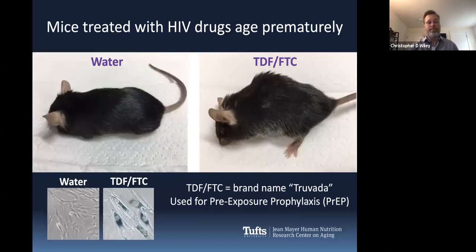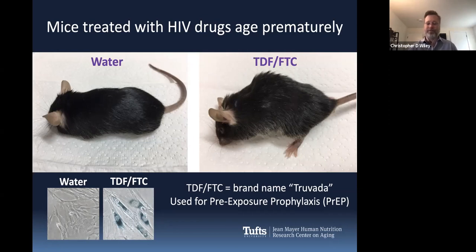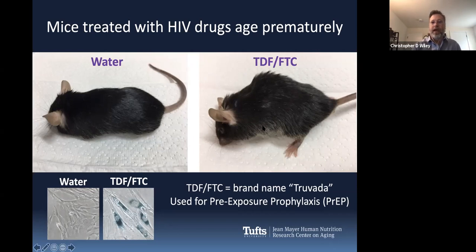I wanted to develop this as a potential model for aging in mice. I treated mice with a combination of HIV drugs known as tenofovir and emtricitabine, or TDF and FTC — sold under the brand name Truvada, used for pre-exposure prophylaxis. After about eight weeks, which is actually years in mouse time compared to humans, they actually age prematurely. These are age-matched mice, but one was being treated with an HIV suppressive therapy. Human cells treated with this therapy also become senescent — again that blue color indicating senescence.